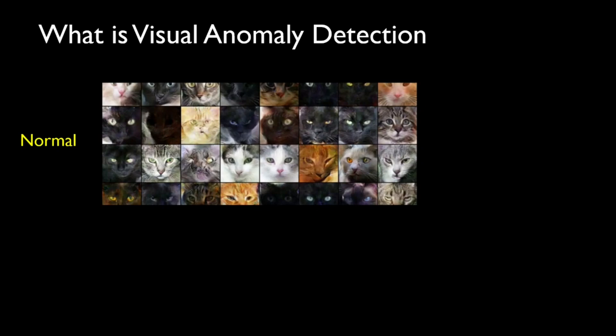For an example, let's say our case of normal data or the distribution, the defined distribution belongs to cat images. So if our model receives a dog image, it should flag it as an anomaly. And that's all it is to visual anomaly detection.